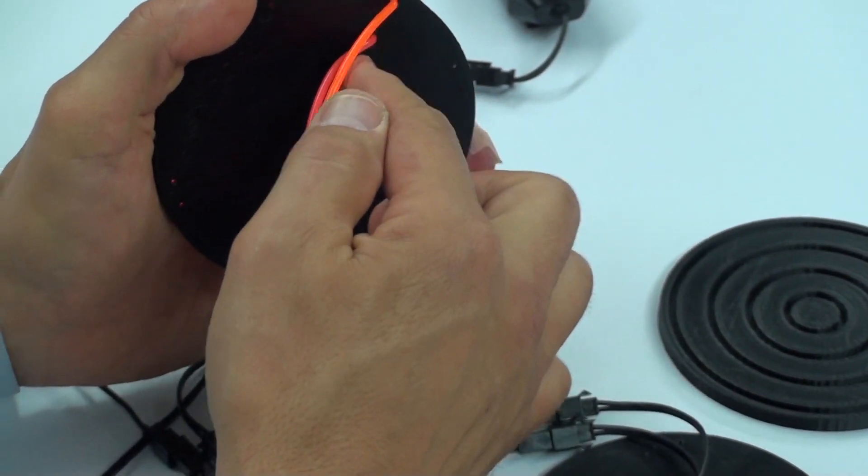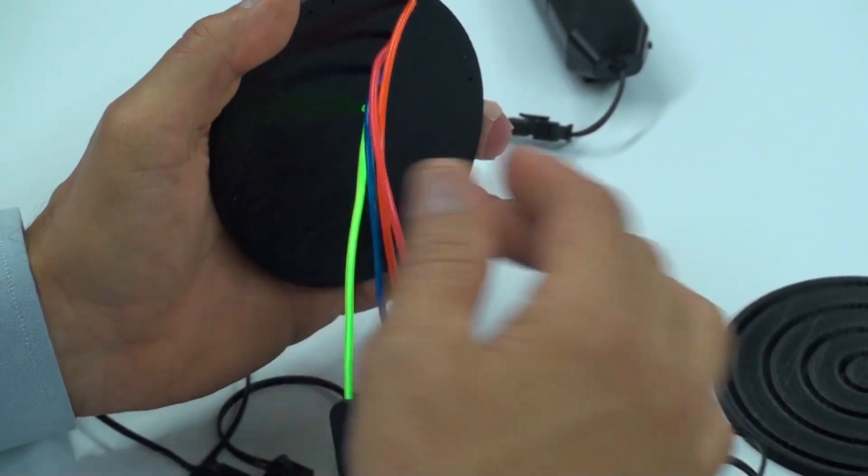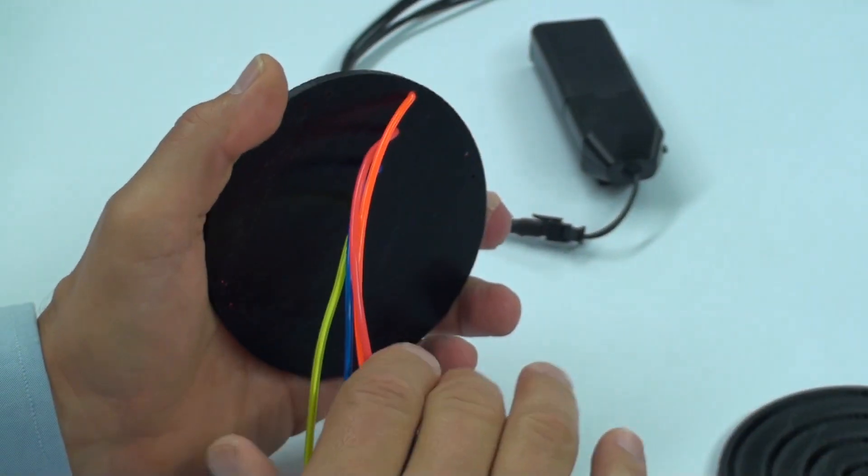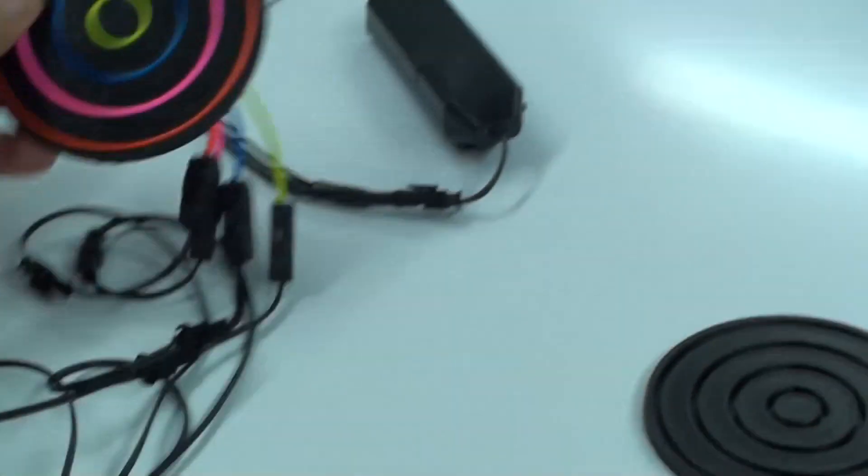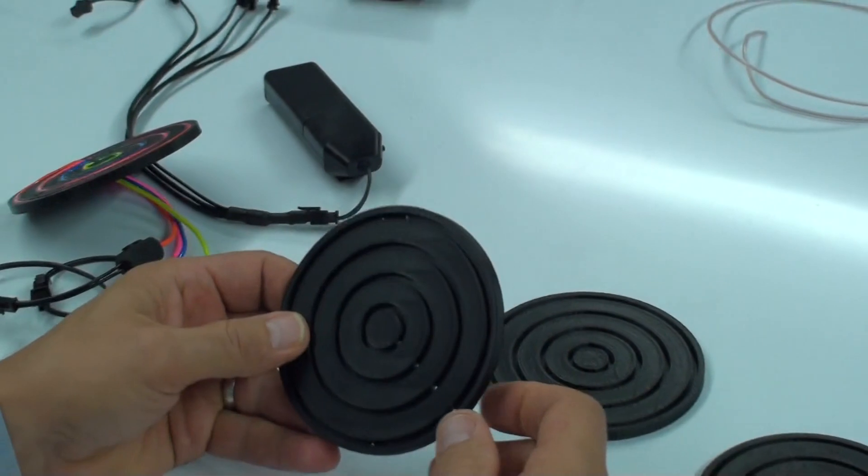Or you can just put four little holes, put the wires through, again glue it or sew it on, and then work with your connectors behind the fabric.